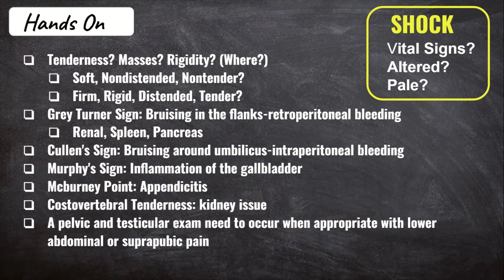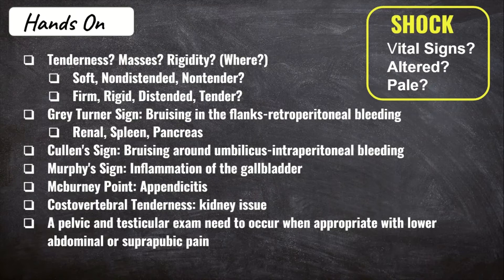Now let's talk about being hands-on with your assessment. You're not a GI attending doctor, so keep it simple and stick to the basics. When palpating, use your whole hand — not just your fingers. You're looking for areas of tenderness, rigidity, masses, or abnormalities. Is the abdomen soft, flat, non-tender, and non-distended? Or is it firm and rigid, tender, or distended? Keep in mind the location of the discomfort to correlate with potential causes and focus your assessment further.